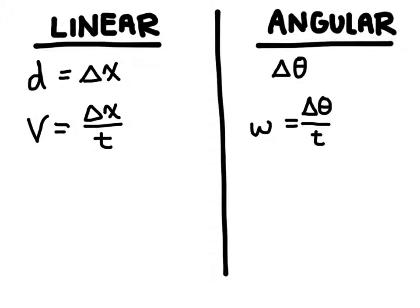And then acceleration. With linear acceleration, we use the symbol a. And that's going to be equal to the change in velocity over time. So how long it took you to change your velocity.